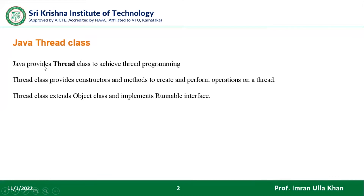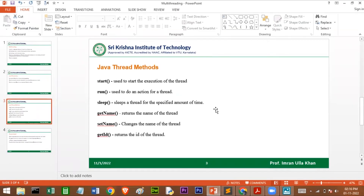Java provides the Thread class to achieve thread programming. The Thread class provides constructors and methods to create and perform operations on threads. Thread class extends Object class and implements the Runnable interface. Java Thread class provides many methods: the start method to start execution, the run method to define the action for a thread, the sleep method to sleep a thread for a specified amount of time in milliseconds, getName, setName, and getId.